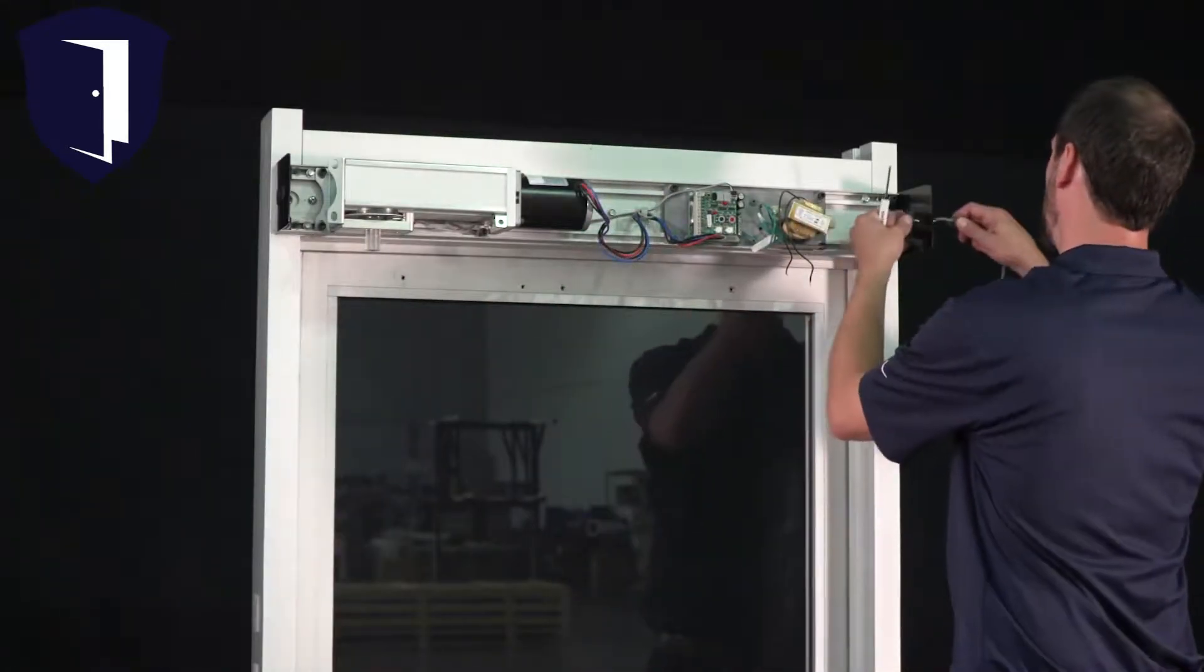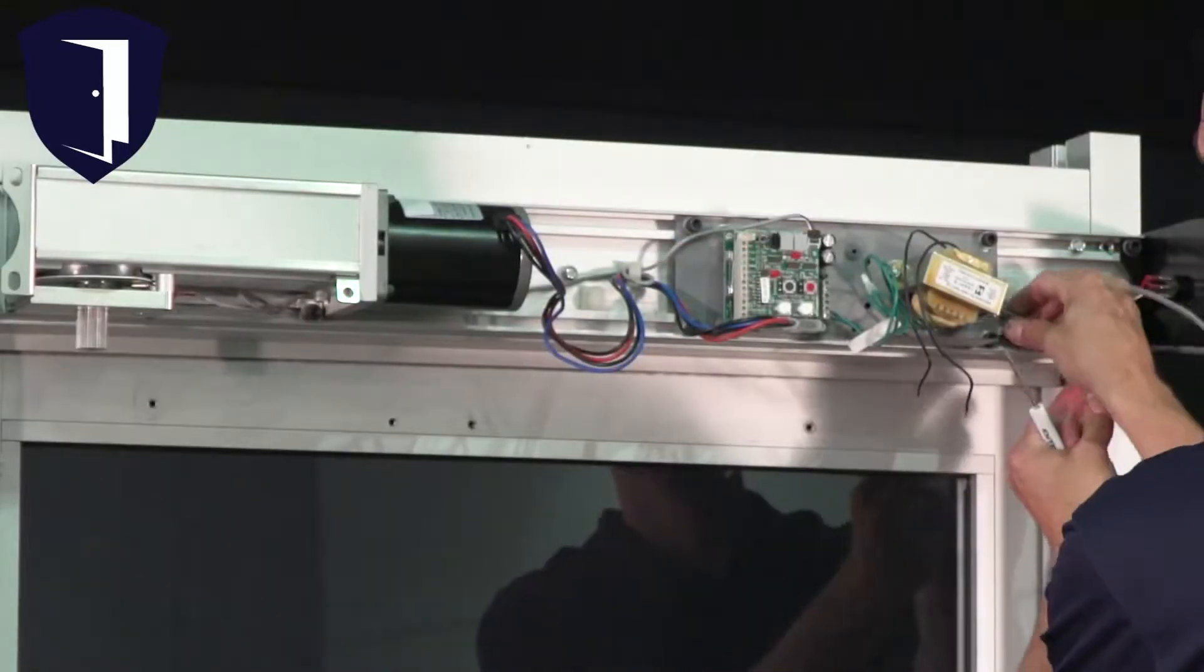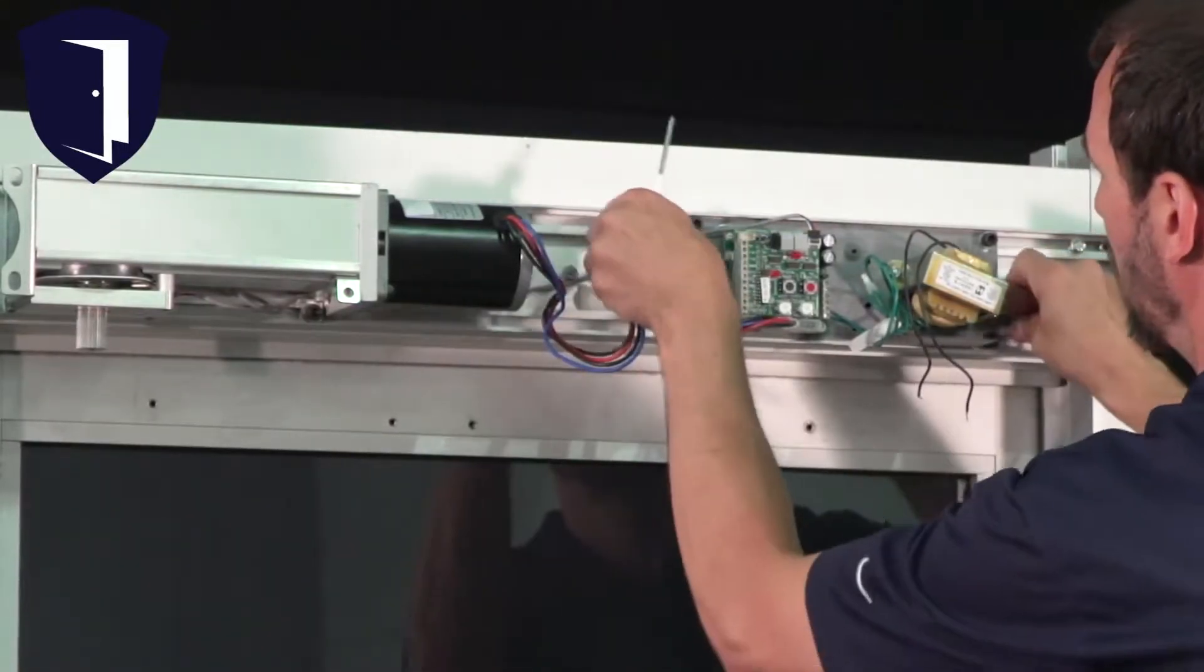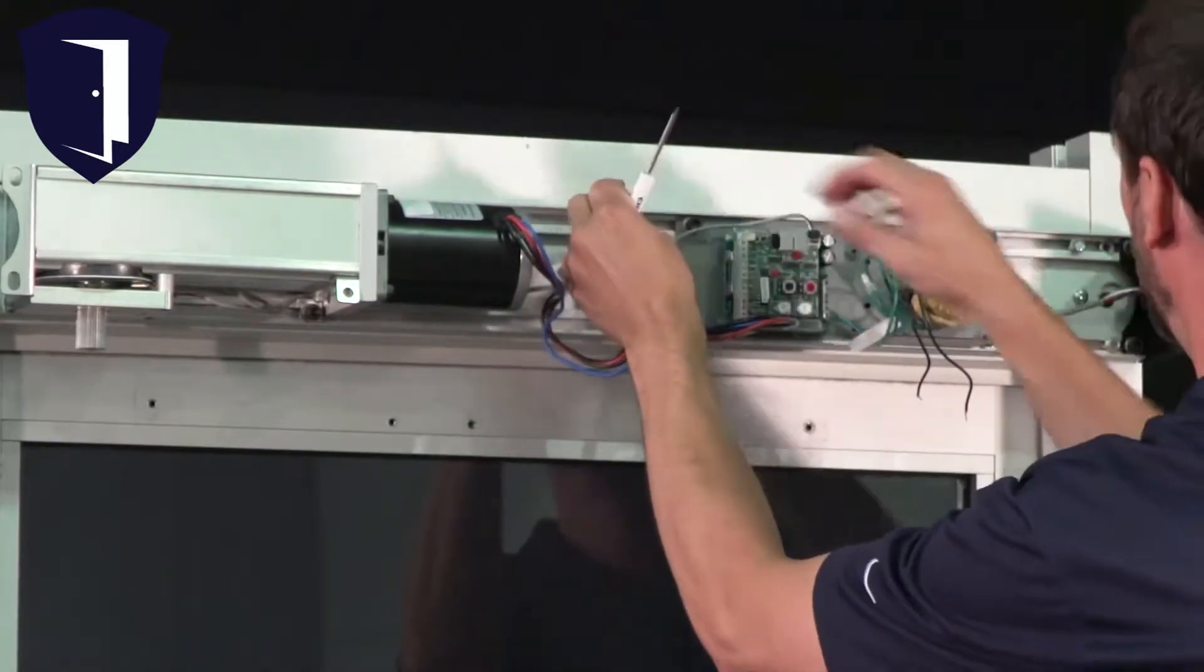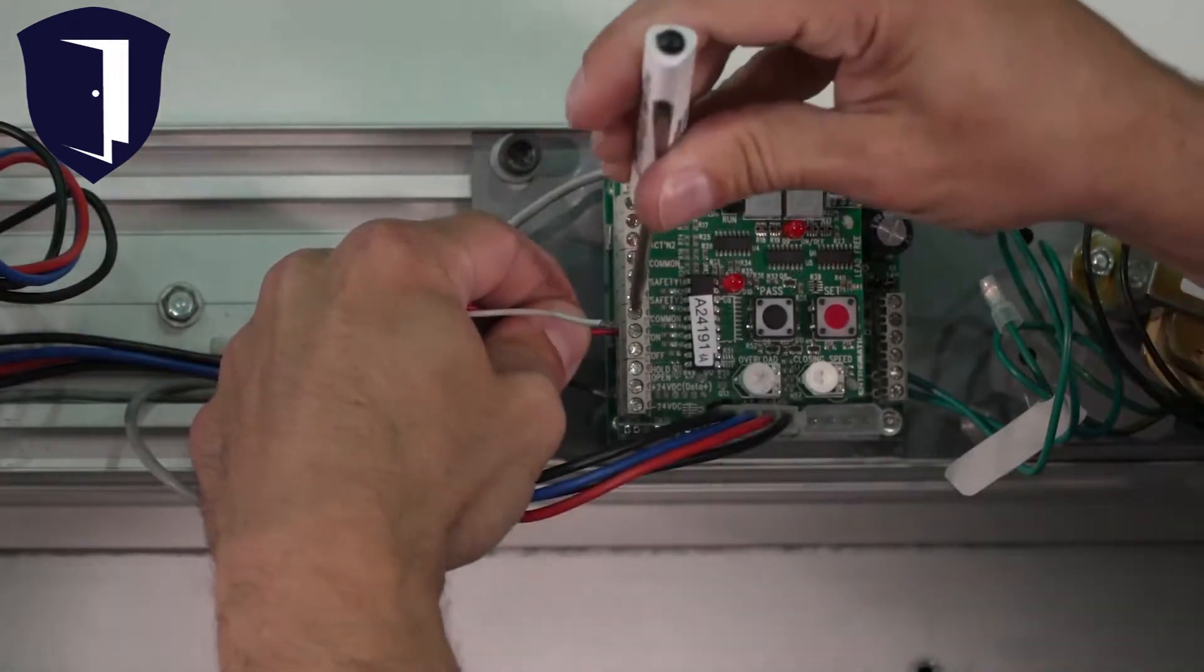To attach the operator switch, feed the wire through the end plate and behind the control board. Then connect the bare ends of the three wires to the connection block. Red in the slot marked on, black to off, and white to the hold open slot.